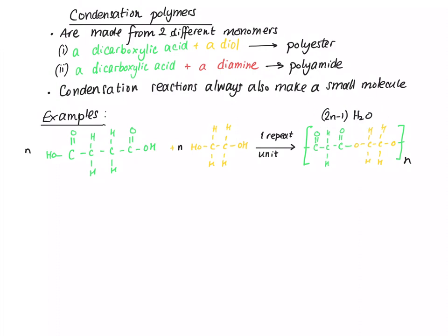Because a carboxylic acid and an alcohol react to form an ester, this polymer is a polyester and we can tell because it's got the ester linkage in it. What happens is you lose water from the OH on one end and the hydrogen on the other — that OH and that hydrogen react to form water, and that's how you get the dicarboxylic acid and the diol reacting together to make the polyester.